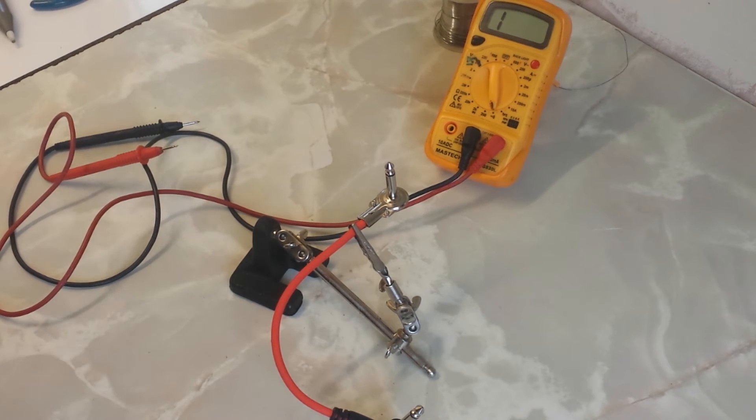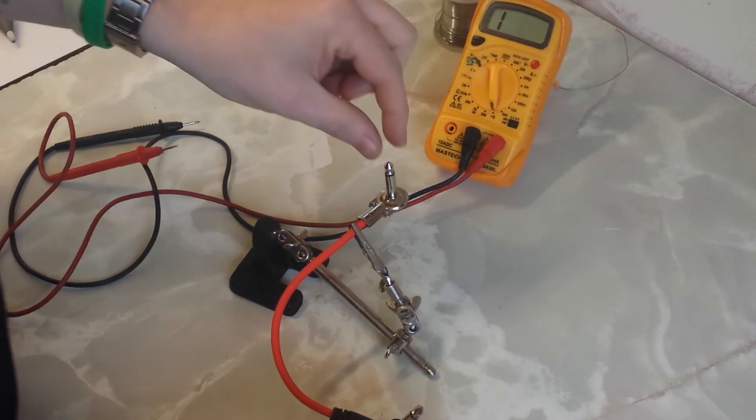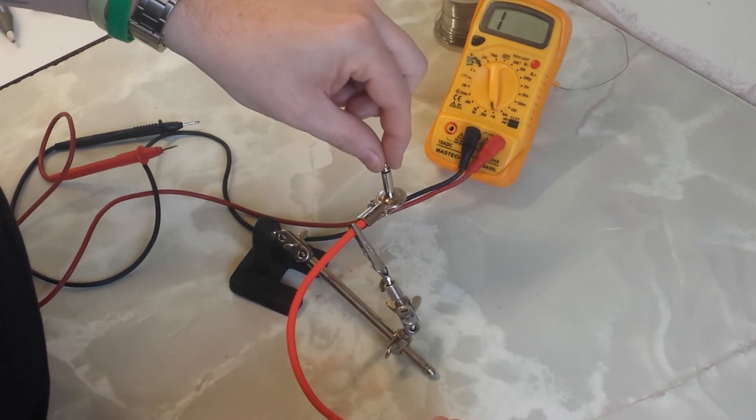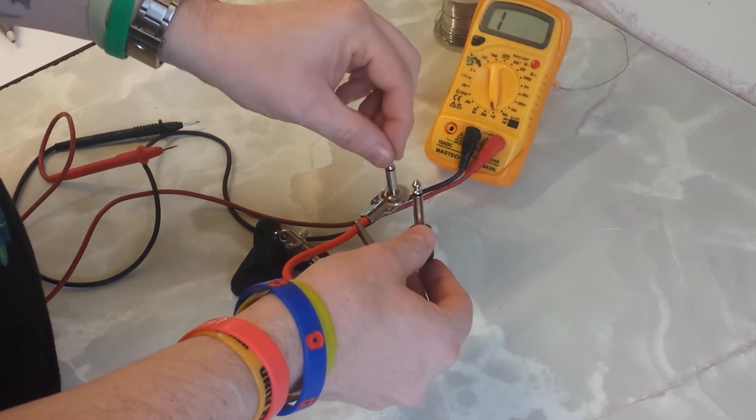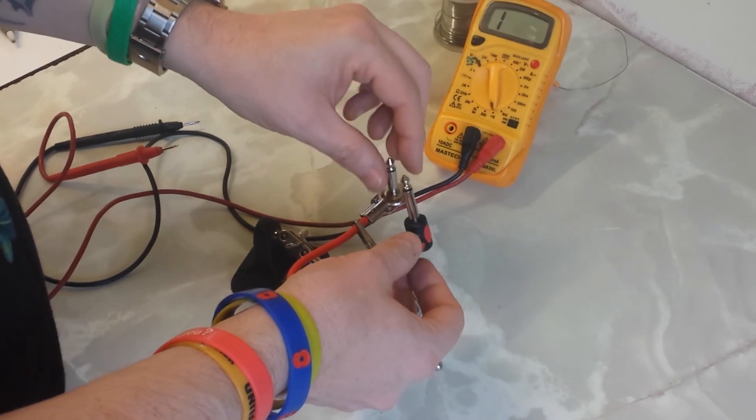The other thing you can do if you're a bit more adept at using one of these is just do a resistance test. There should be virtually zero resistance between the two tips, and if there is a large amount of resistance, the odds are that the cable's probably damaged somewhere inside.